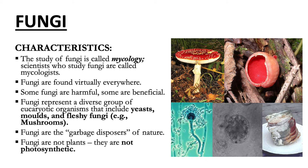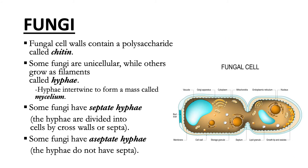Fungi are sometimes incorrectly referred to as plants, but they are not. One way fungi differ from plants and algae is that they are not photosynthetic — they do not have chlorophyll and other photosynthetic pigments. Fungal cell walls contain a polysaccharide called chitin, which is not found in the cell walls of any other microorganism except fungi and the exoskeletons of arthropods.